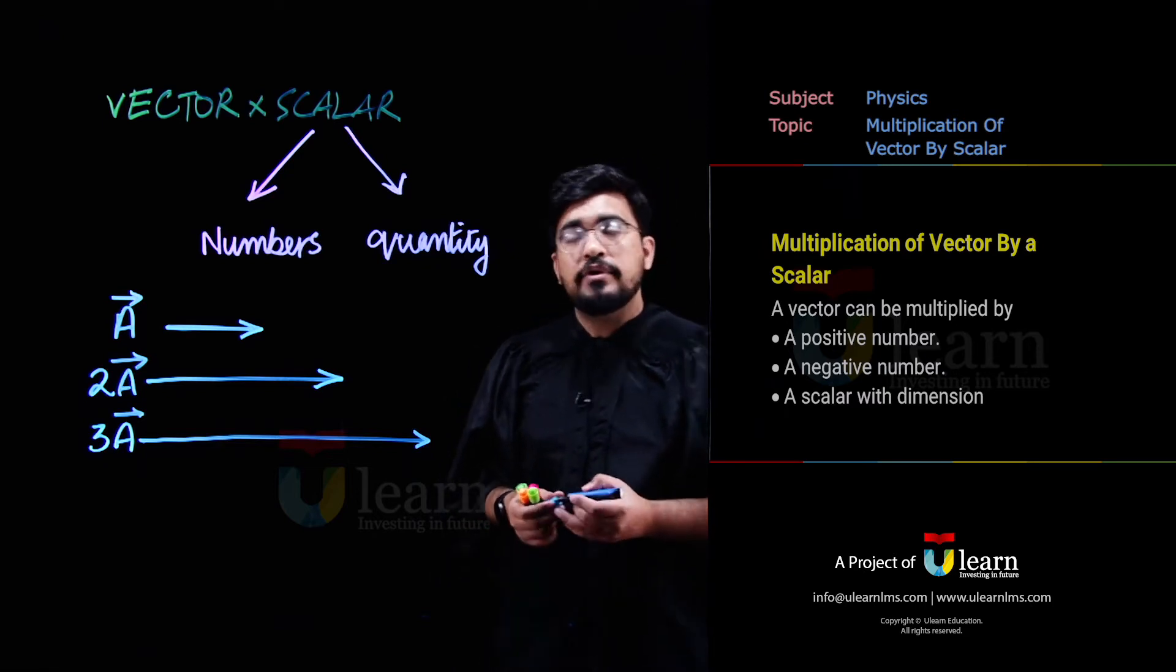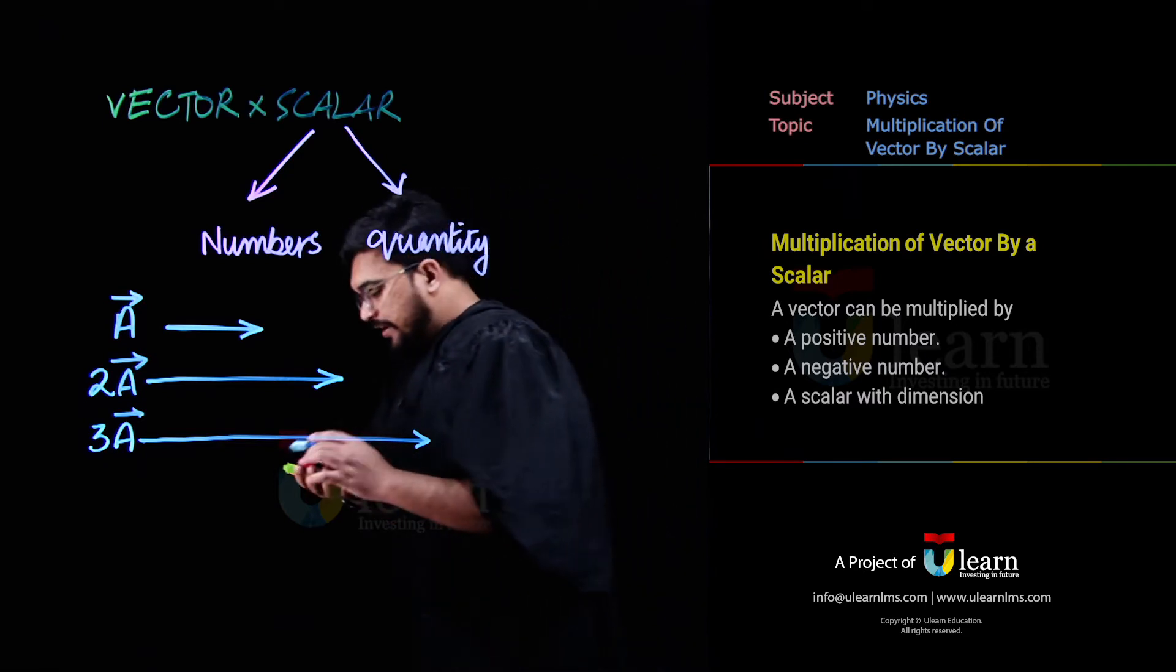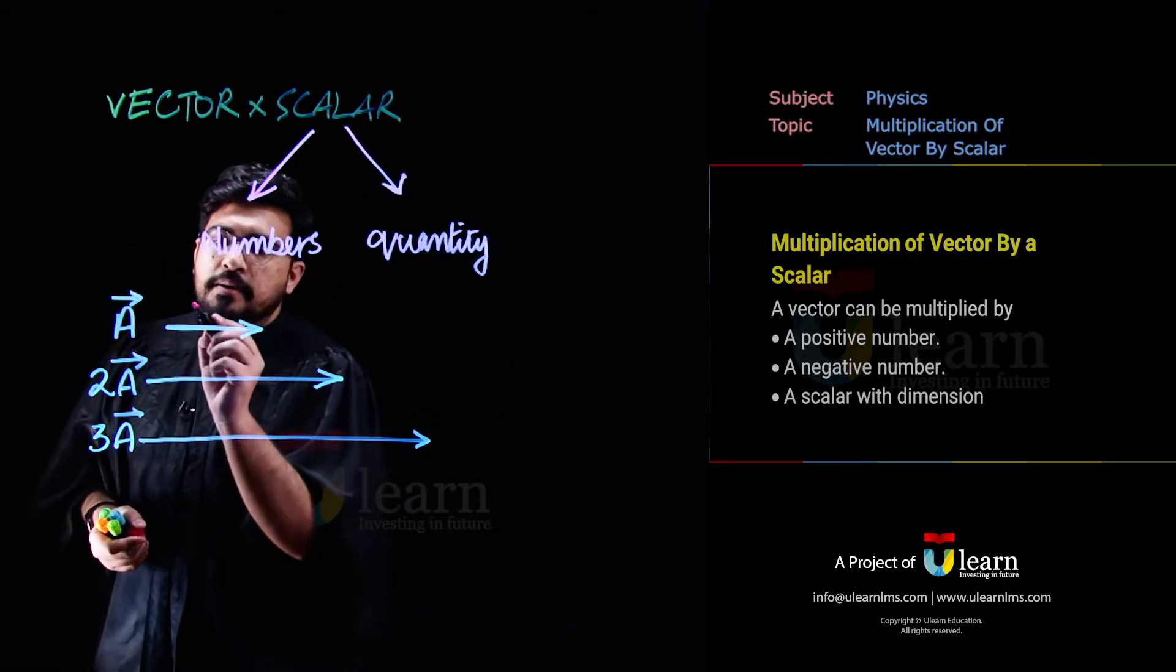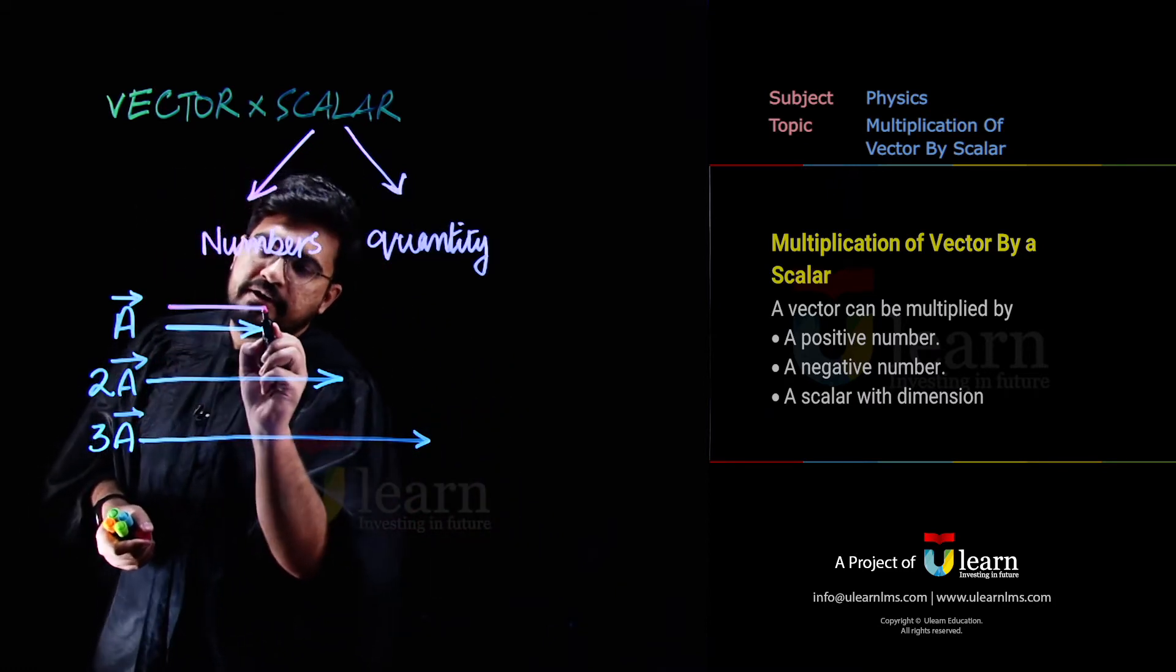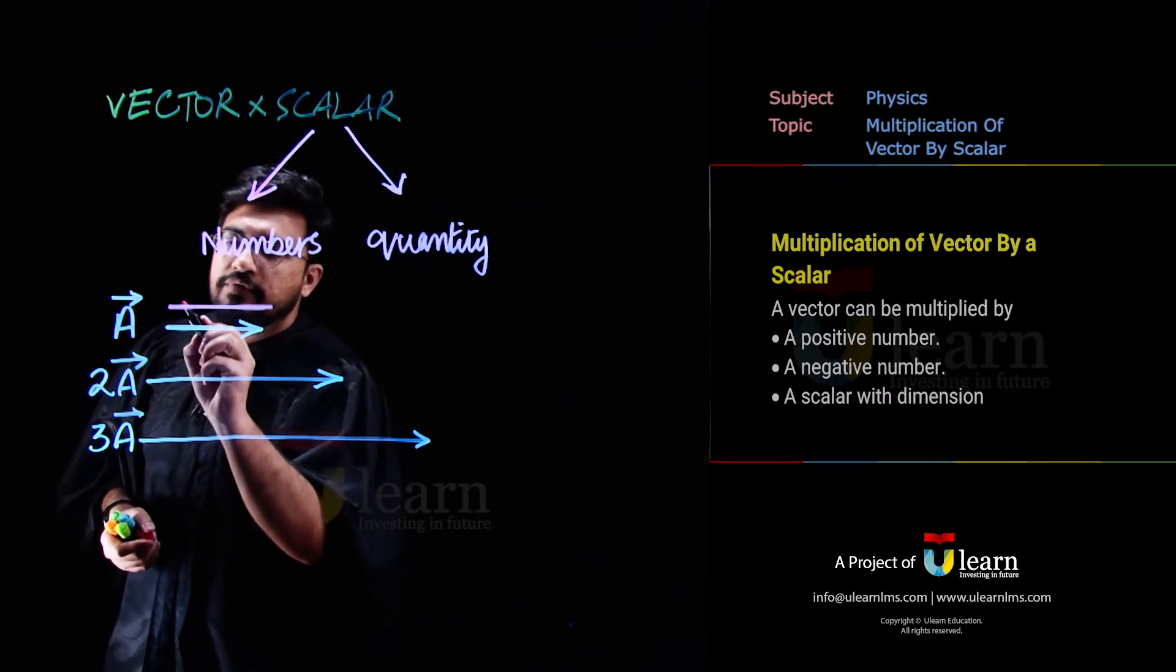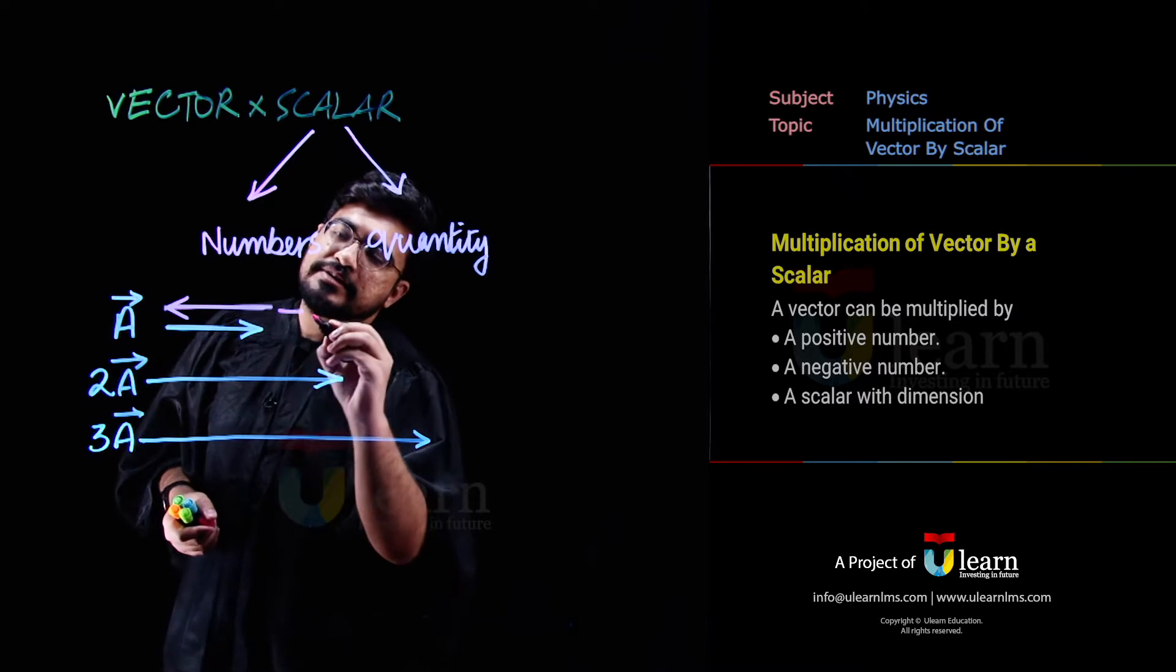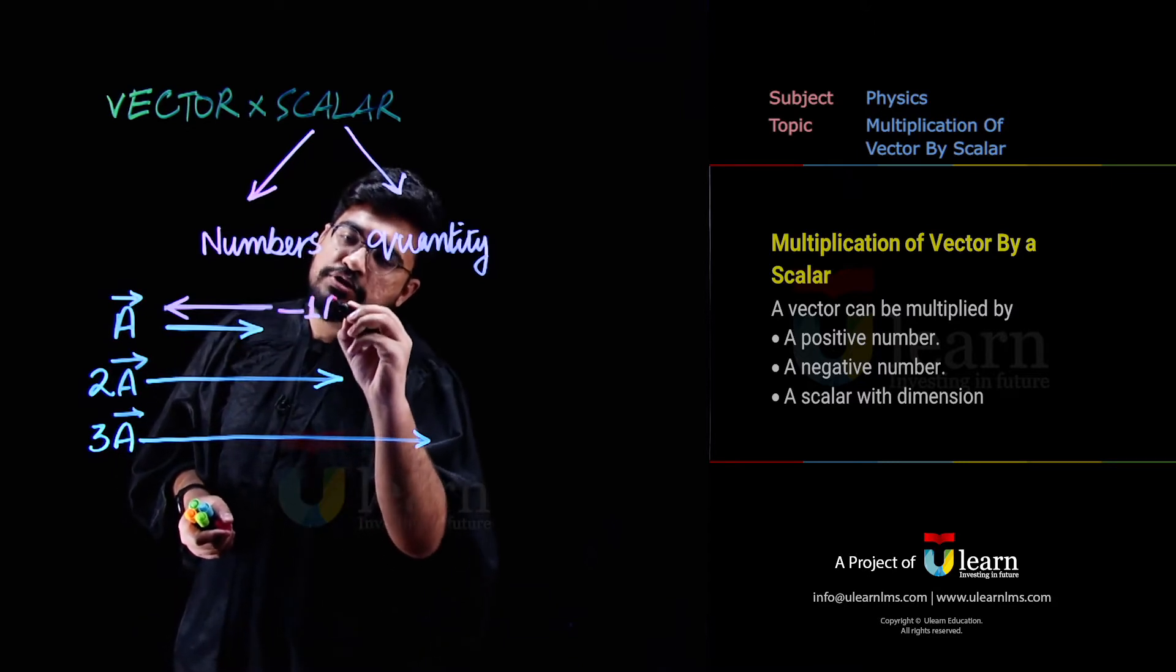Lekin number toh negative bhi ho sakta hai. What if agar hum isko minus 1 se multiply karete hai? Minus se jab bhi aap multiply karete ho, negative sign vector ki direction ko bhi reverse kar deeta hai. Yaani this is minus 1 into a.